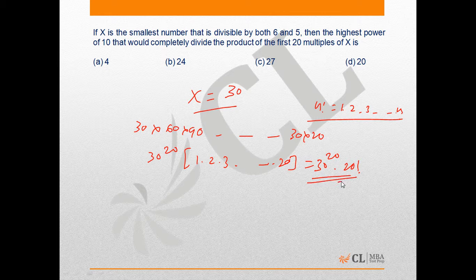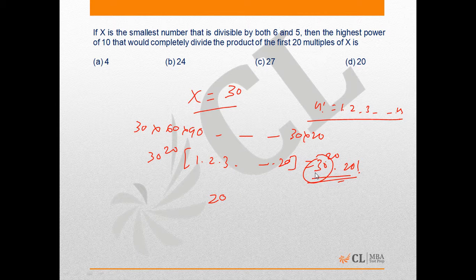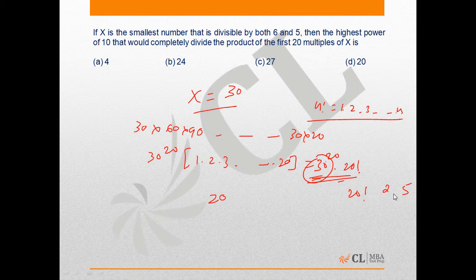This product has 20 multiples contained in 30. Now we need to find the number of zeros in 20 factorial. To count zeros, we need to count the number of 2s and 5s. In factorials, the number of 5s will definitely be less than the number of 2s.